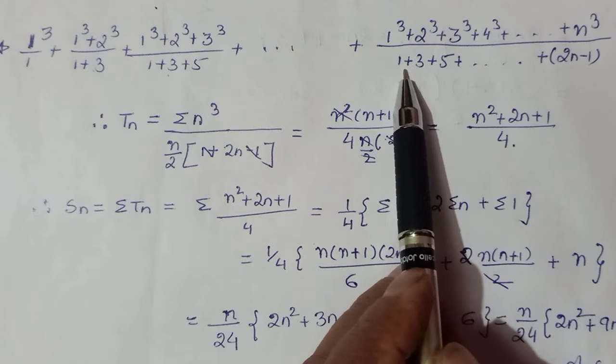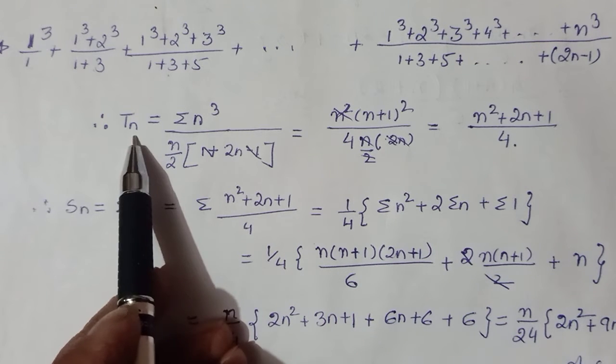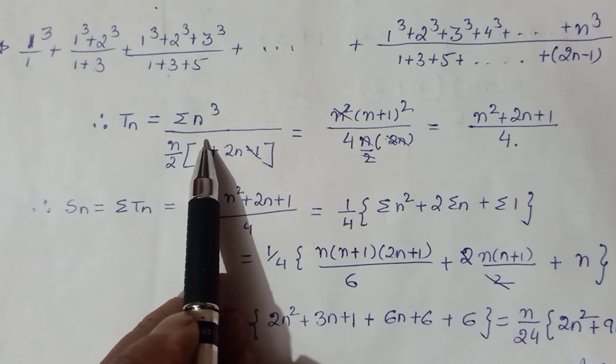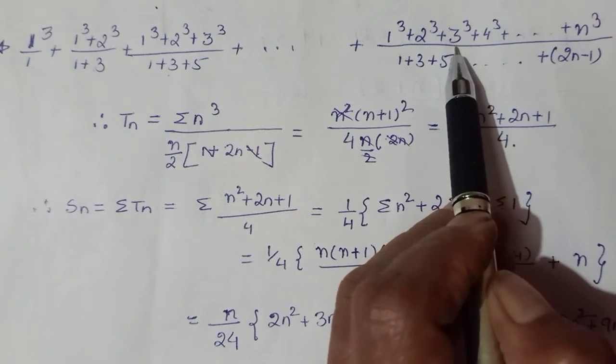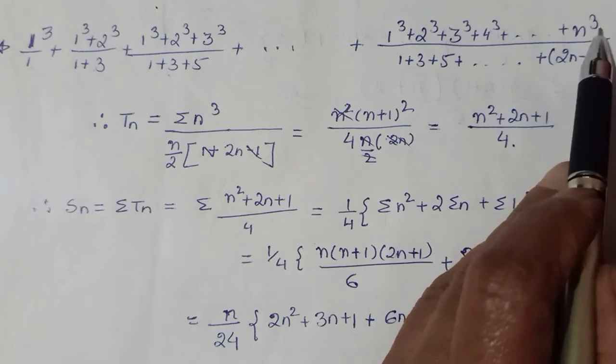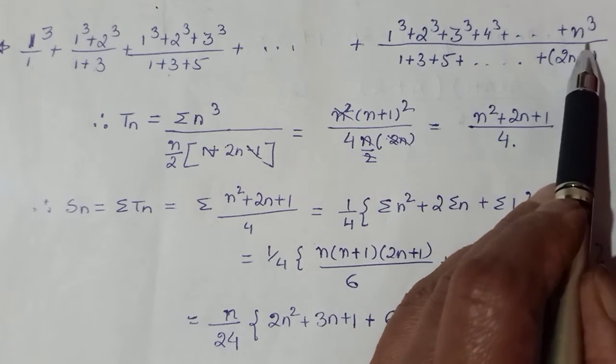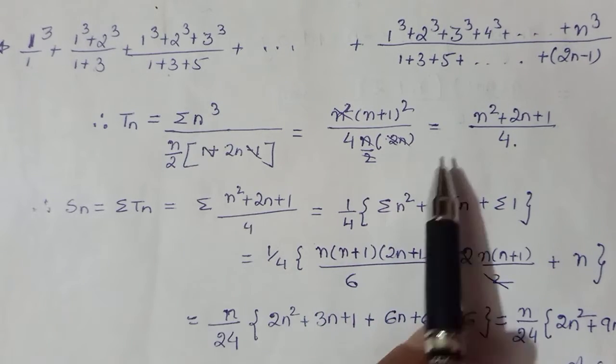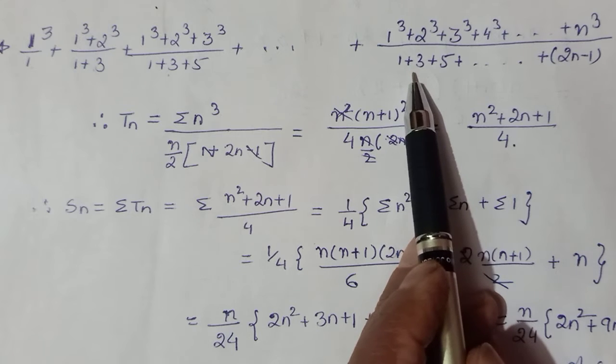This is your nth term: it's Σn³. Denominator you can apply sum of AP also, all right? Every odd number, these odd numbers form an AP.